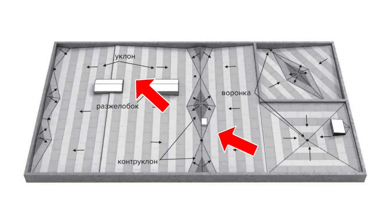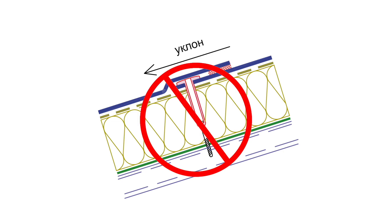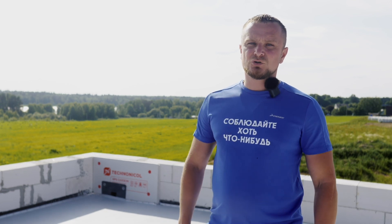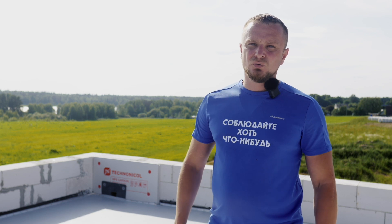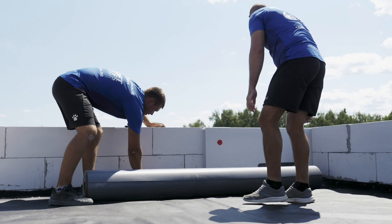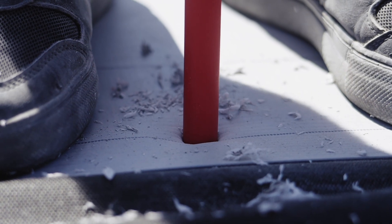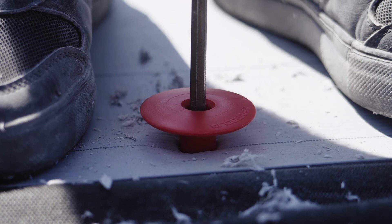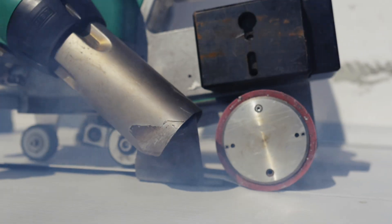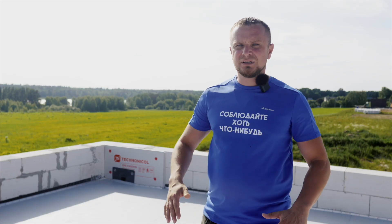Плоская кровля только называется плоской — на самом деле она имеет водостоки к воронкам из уклонов и контруклонов. Чтобы определить, как расположить листы ПВХ-мембраны при монтаже, вы должны представить, в каком направлении пойдёт вода. Направление воды не должно встречать на своём пути встречный шов. Встречный шов — это шов, сваренный таким образом, что вода не скатывается с одного листа на другой, а встречает преграду из следующего листа. Поэтому монтаж мембран на площади необходимо производить снизу вверх, от нижней точки к верхней. Первый лист ПВХ-мембраны крепится со всех сторон, последующие листы с одной стороны крепятся, а с другой стороны привариваются к предыдущему листу, образуя цельное гидроизоляционное полотно.